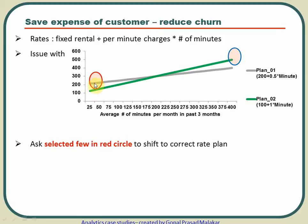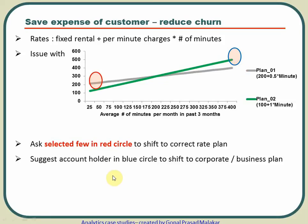For customers in the blue circle — those who are likely running a business from home — you might suggest shifting to a corporate or business plan. This helps the customer save money, but it also helps the business. Once a customer moves to a corporate plan with a higher fixed rate but lower per-minute cost, they start using the service more frequently, increasing volume for both the customer and the business.